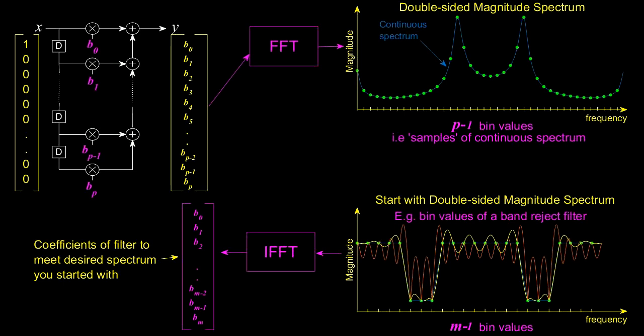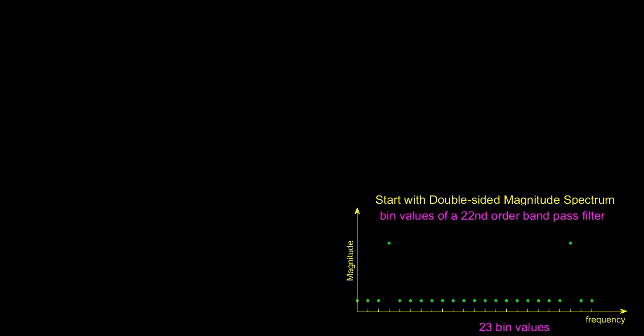I think the easiest way to explain this is to consider the inverse FFT of a bandpass filter like the one shown which is zeros in all bins except for bins 3 and 20 which have values of 1.